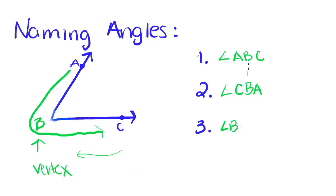That's why it has to be in the middle. Or if you just name it angle B, you just have that vertex angle because that makes sure that it's this angle that you're talking about.